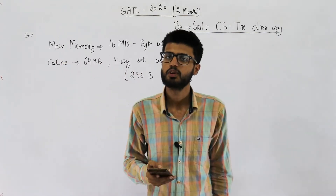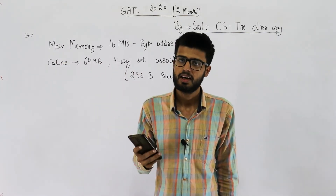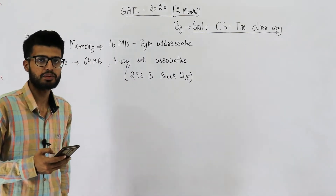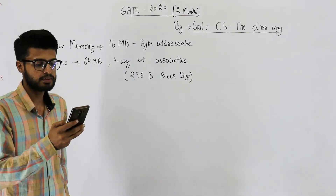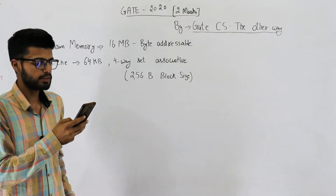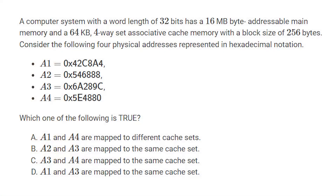Hi students. This question is from the GATE 2020 exam and is from the topic of k-way set associative cache mapping. It's for two marks. A computer system with a word length of 32 bits has a 16 MB byte-addressable main memory and a 64 KB four-way set associative cache memory with a block size of 256 bytes.